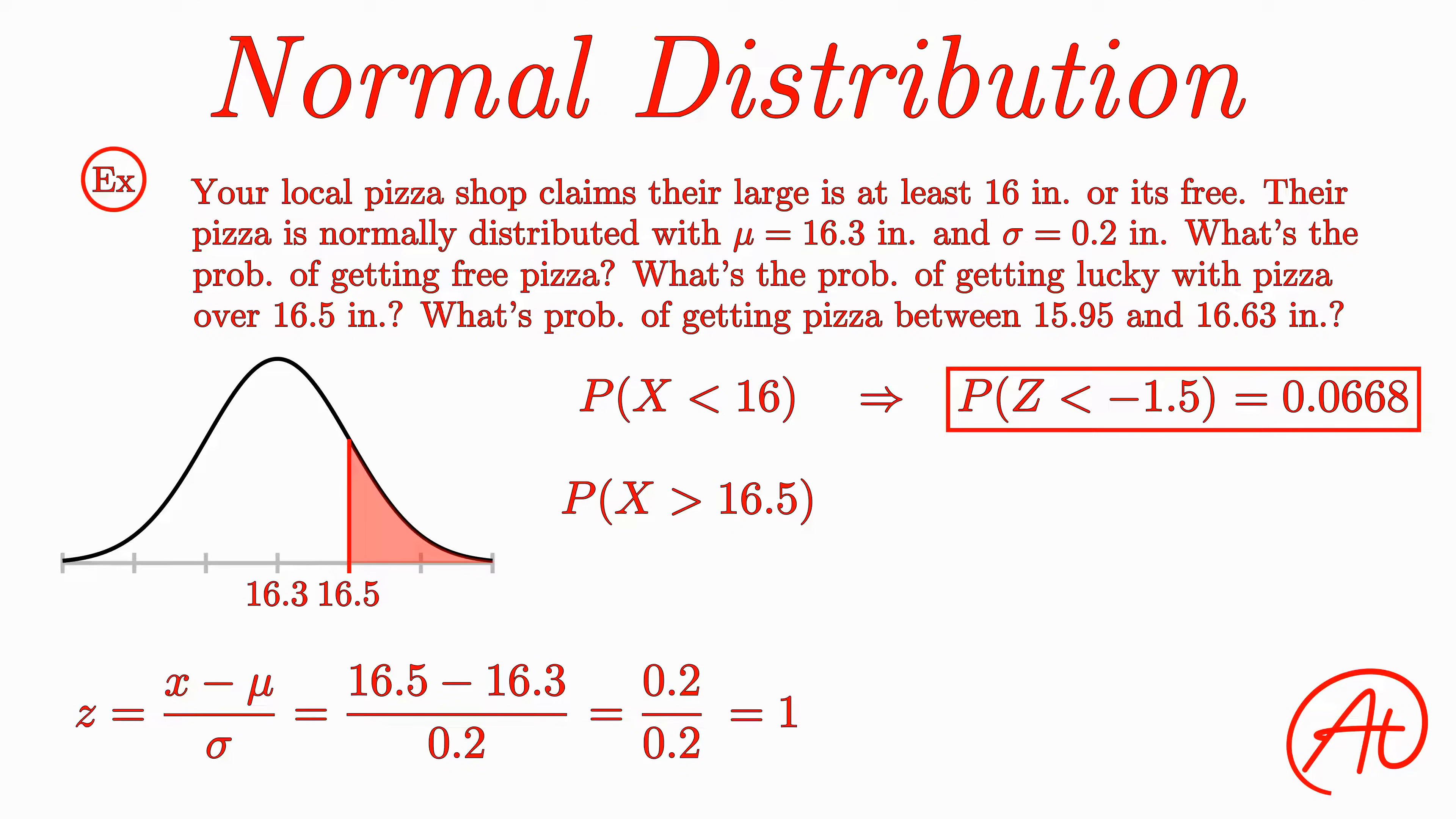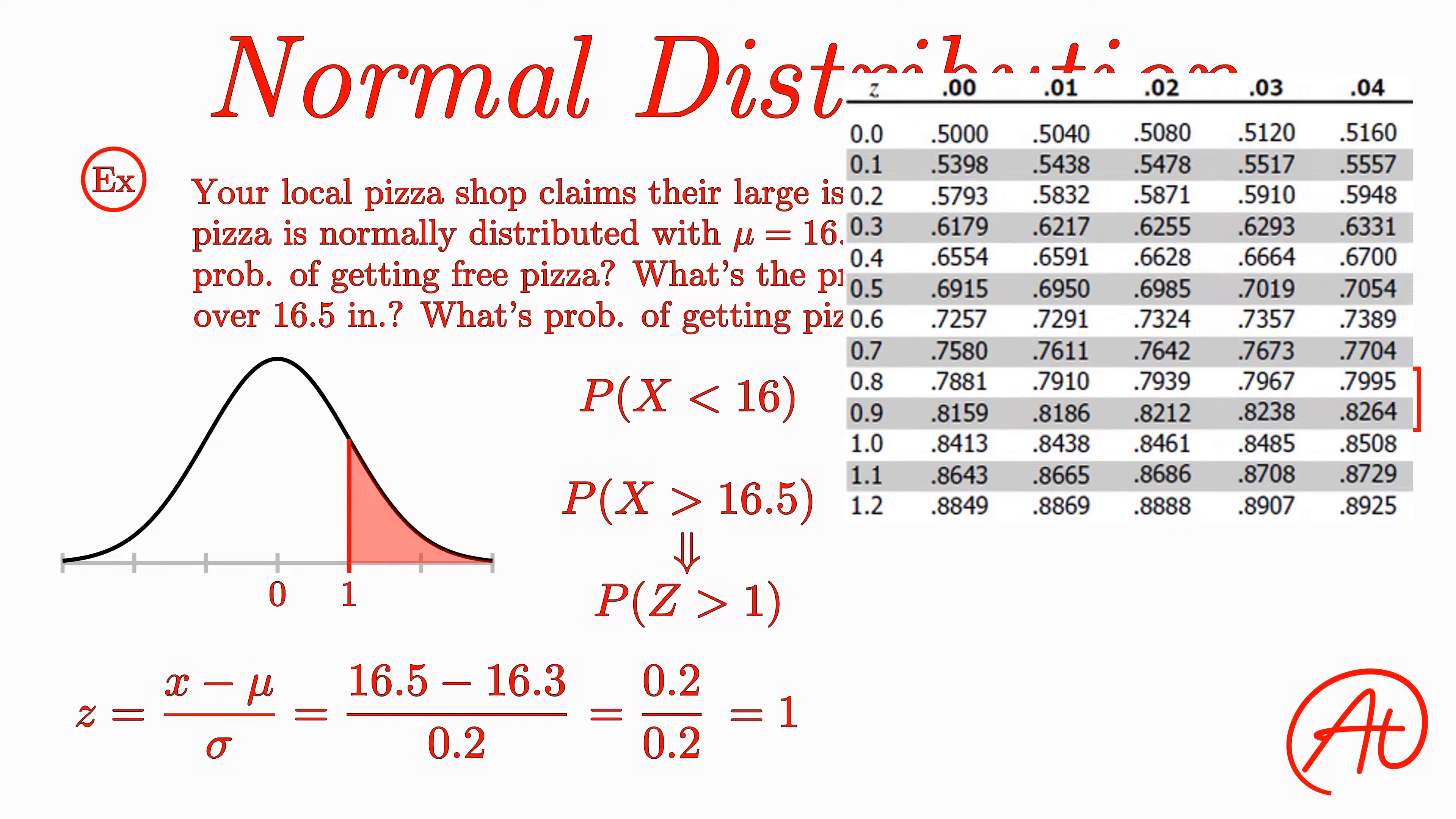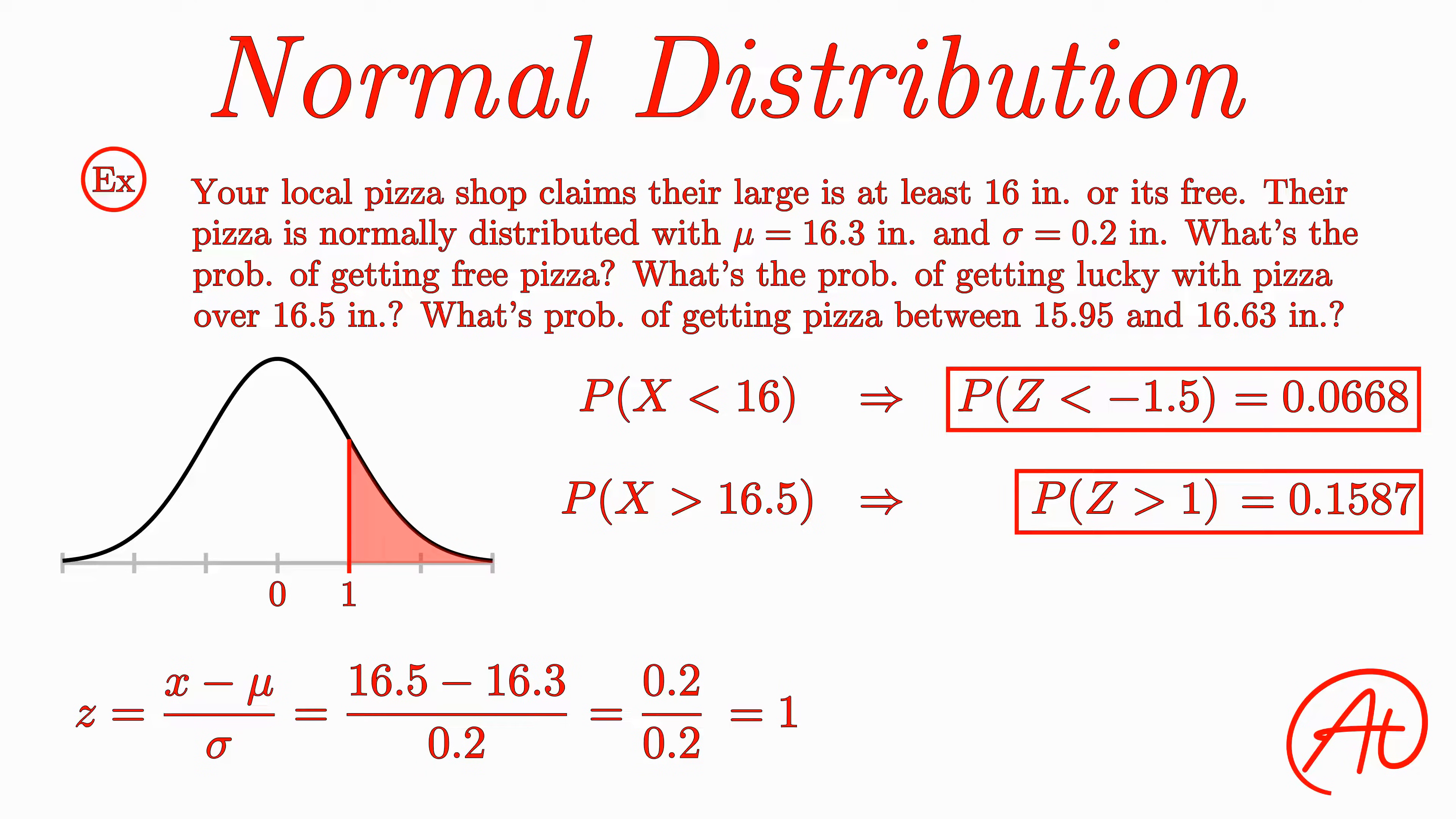So this time, we want to find the probability of having a z-score higher than 1. Looking at our chart for our z-score, we go to row 1.0 and column 0.00 to get a probability of 0.8413. But keep in mind, this chart always gives you the probability to the left of your z-score. Since the area under the entire distribution is always equal to 1, and the area to the left is 0.8413, we can get the area to the right by subtracting 1 minus 0.8413 to get our final answer of 0.1587, or a 15.87% chance of getting a pizza larger than 16.5 inches.